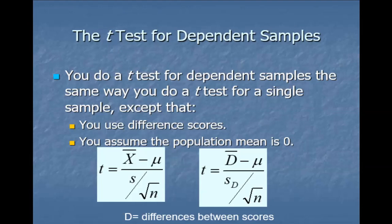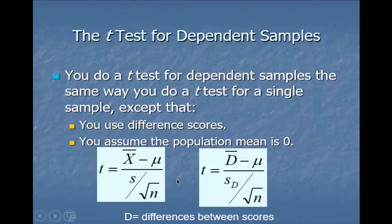If we're assuming the null hypothesis to be true, then μ is zero, so the formula simplifies to: d̄ divided by the standard deviation of d divided by the square root of n. You'll see that the one-sample t and the dependent-sample t are really no different — we just had to find the difference scores first to get the one sample we're interested in, then calculate the average difference score to plug into the formula.